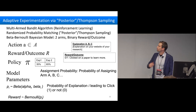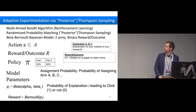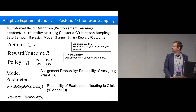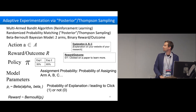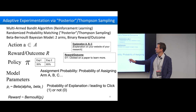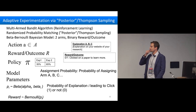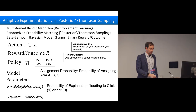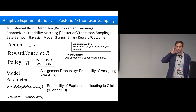More formally, in the beta-Bernoulli Thompson sampling model: you have two arms (explanations A and B), a binary reward outcome (clicked on paper: 0 or 1), and a policy giving the assignment probabilities over time. The beta distribution is placed on the probability that an explanation leads to a click, and the reward has a Bernoulli likelihood with success probability drawn from the beta prior — that's the basic setup of the posterior Thompson sampling algorithm.